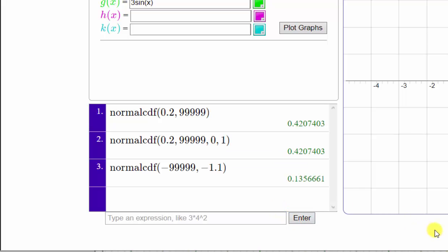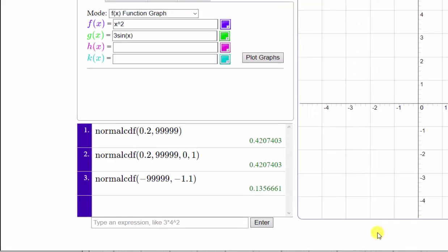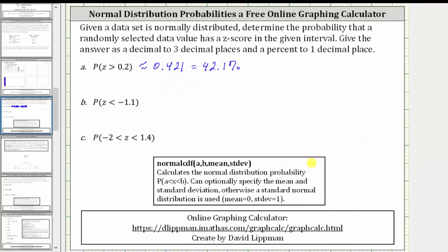To three decimal places, we have approximately 0.136, which is equal to 13.6%.